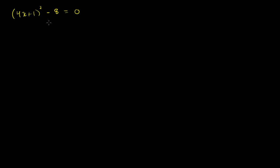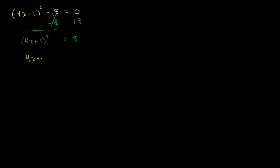What happens if we add 8 to both sides of this equation? The left-hand side becomes 4x plus 1 squared. The 8's cancel out, and the right-hand side becomes just positive 8. Now what can we do to both sides? This is just straight vanilla equation solving, not any kind of fancy factoring. We can take the square root of both sides. And of course, you want to take the positive and the negative square root, because 4x plus 1 could be the positive or negative square root of 8.